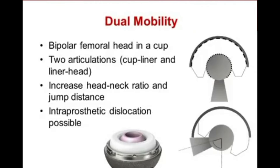Dual mobility femoral heads have received increasing attention. This involves placing a bipolar femoral head into an acetabular cup — essentially an unconstrained tripolar articulation. Concerns include increased numbers of articulations and intraprosthetic dislocation, where the inner femoral head dislocates from the outer femoral head. Benefits include increased head-neck ratio, increased femoral head diameter, and improved jump distance.